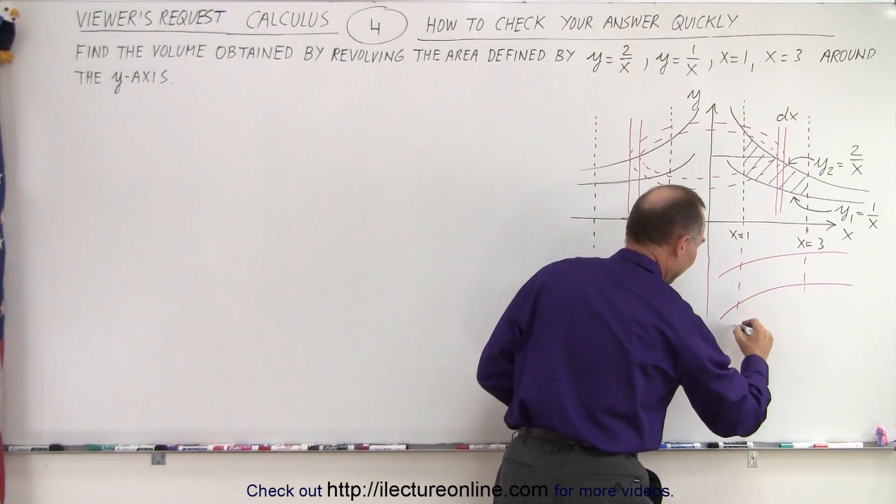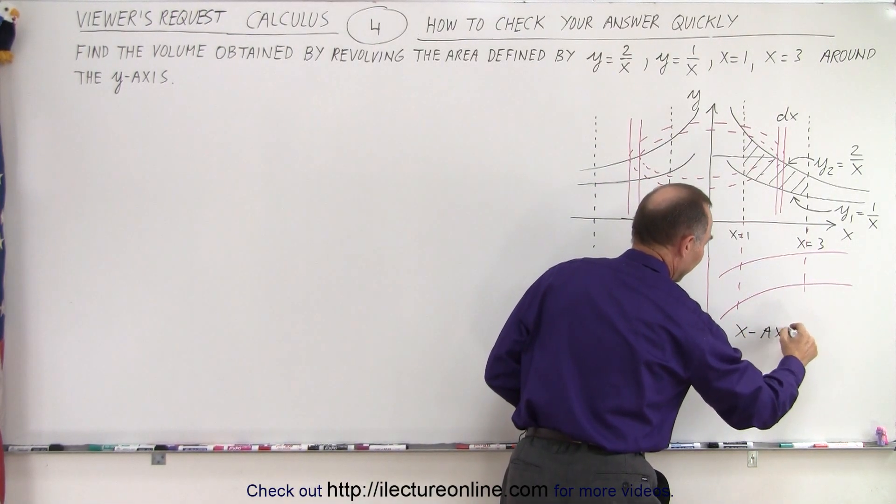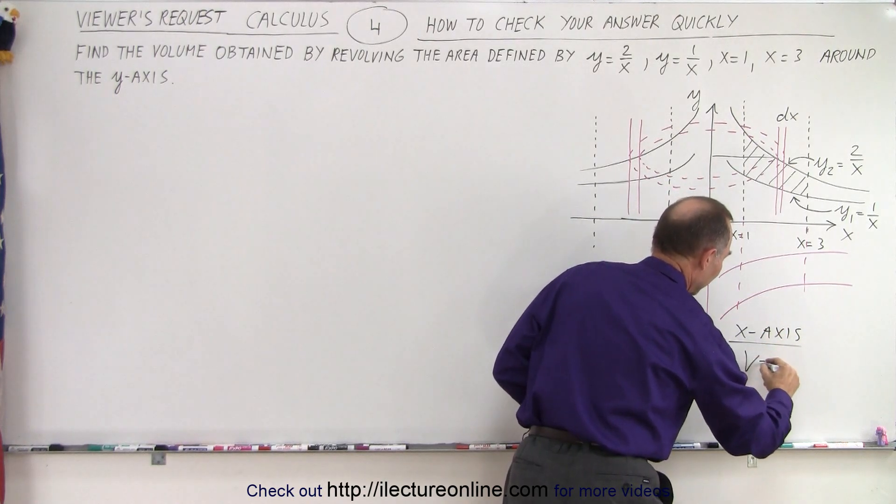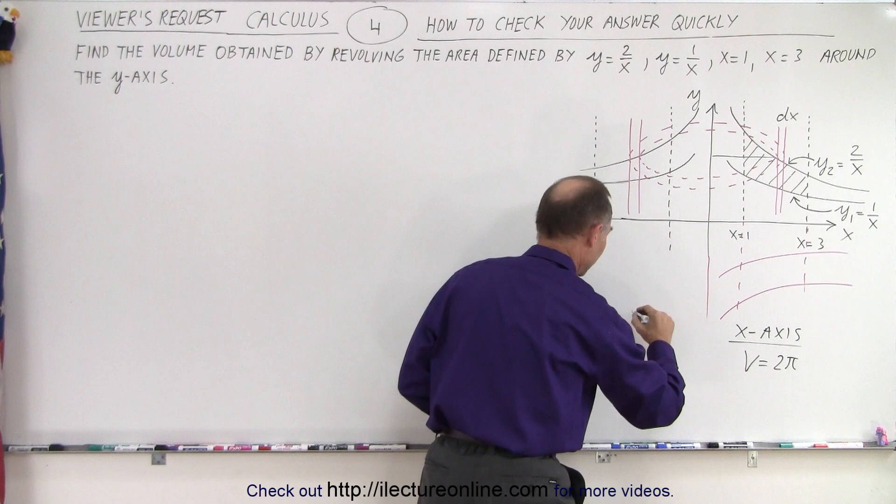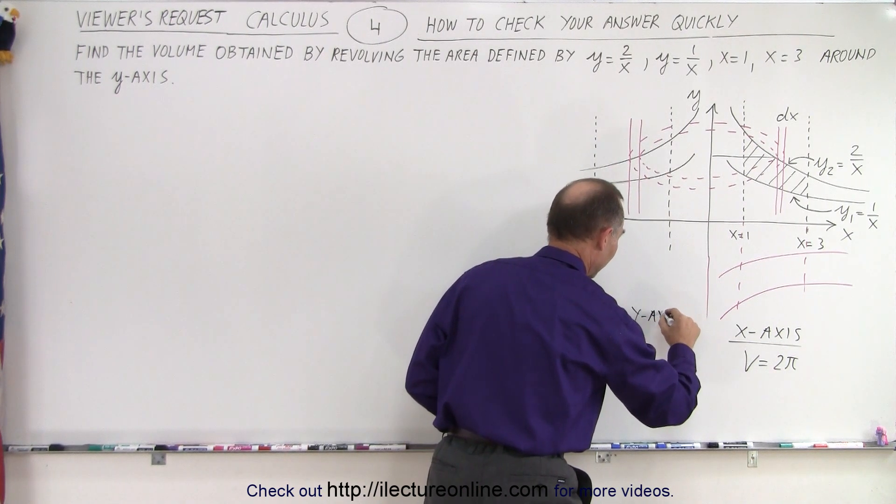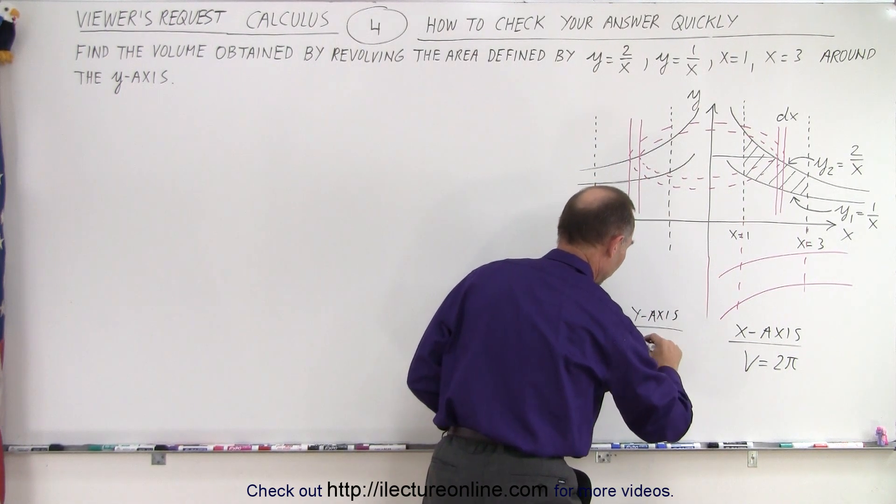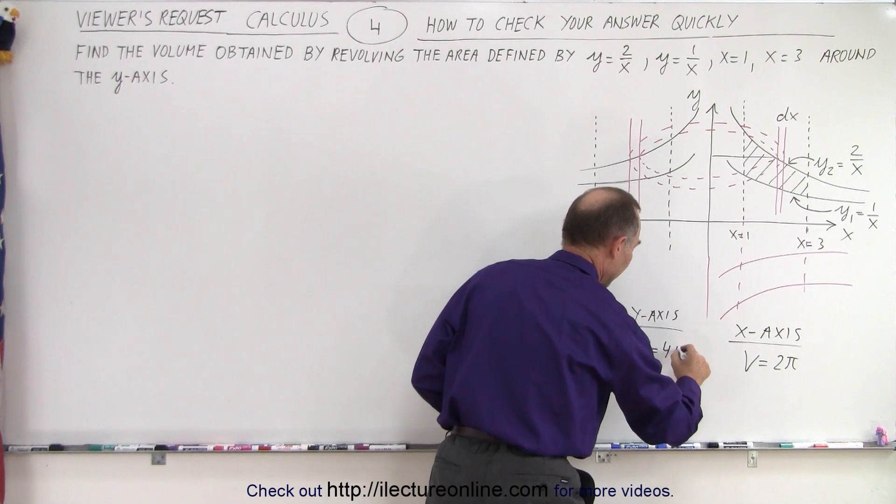If we did it around the x-axis, if you remember, the volume was equal to 2π. And when we revolved around the y-axis, the volume was equal to 4π.